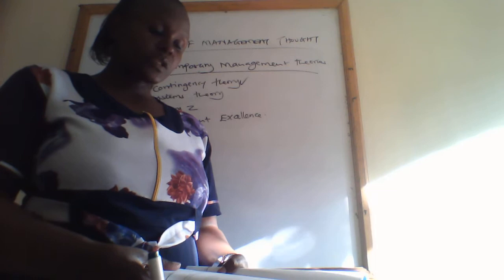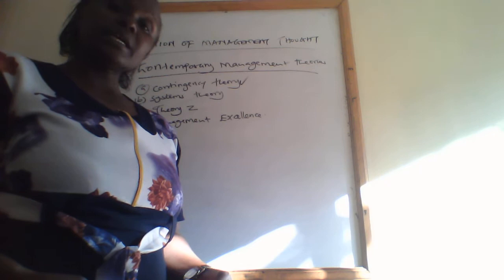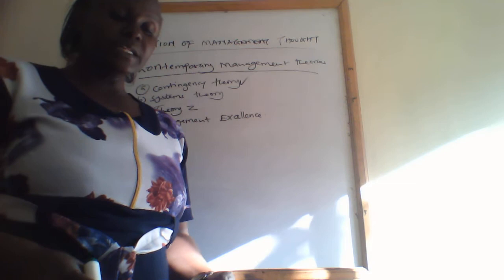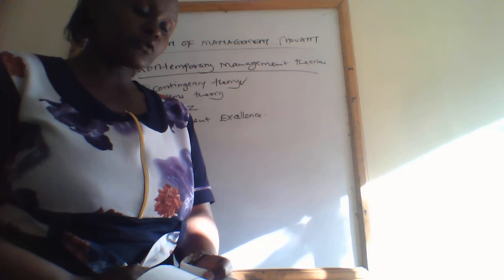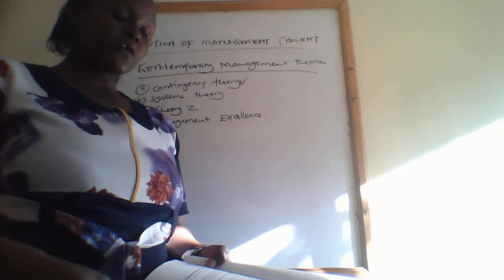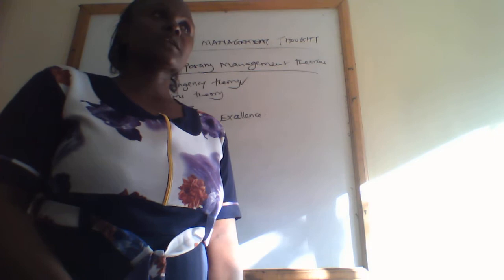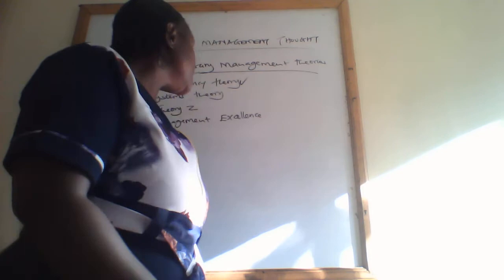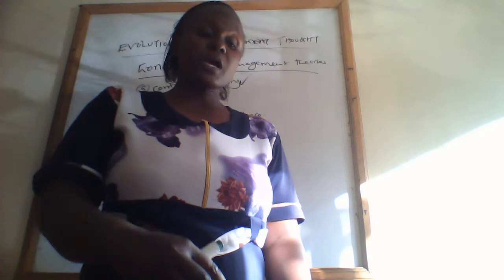Then we have management excellence. This theory was advocated by Thomas Peters and Robert Waterman in the mid-1980s. After studying various American firms, they concluded that successful managers were characterized by eight attributes. To be a good manager you must have the following characteristics: first, a bias for action; second, staying close to the customer so that you can serve them the right way; third, autonomy and entrepreneurship — you must have the characteristics of an entrepreneur and also autonomy.